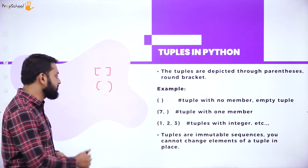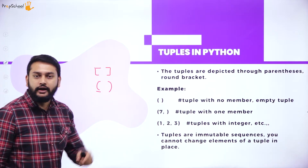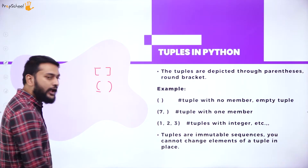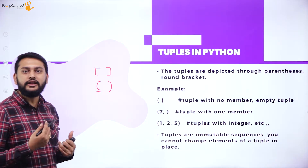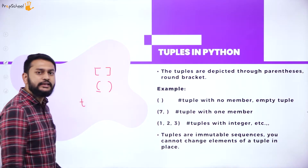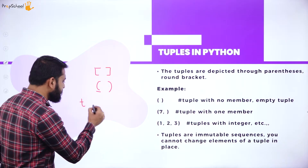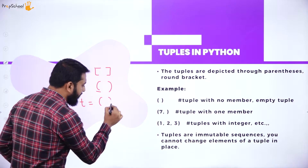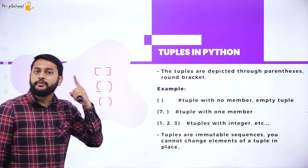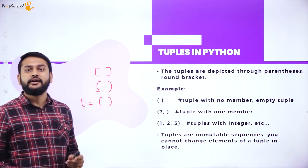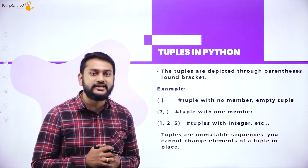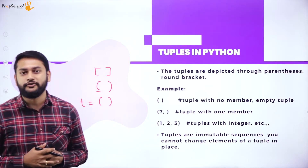So the parentheses — that is the first difference you need to understand. To create an empty tuple, I write t equals open parenthesis and closed parenthesis. This is how I will be creating the empty tuple.